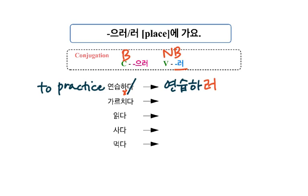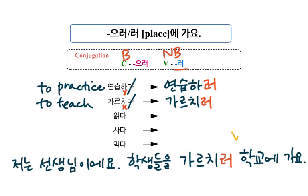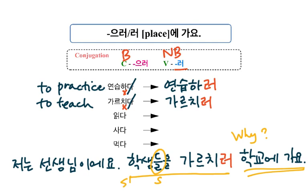가르치다 means 'to teach.' There is no 받침 before 다, so take out 다 and add 러. 가르치러. 저는 선생님이에요. 학생들을 가르치러 학교에 가요. 왜 학교에 가요? 학생들을 가르치러 — in order to teach. I go to school to teach.